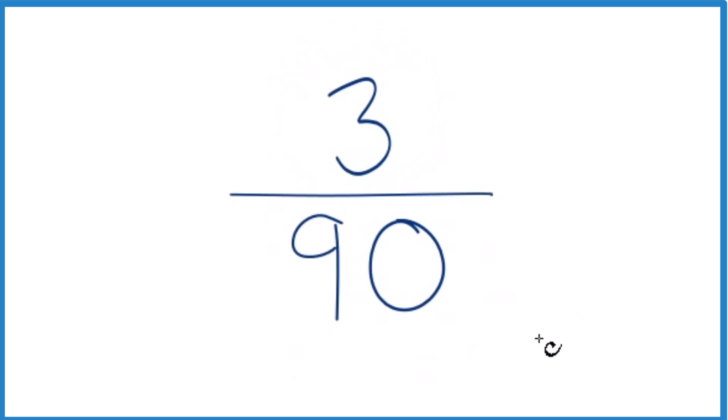To do that, we need to find a common factor. That's a whole number that divides evenly into 3 and into 90.